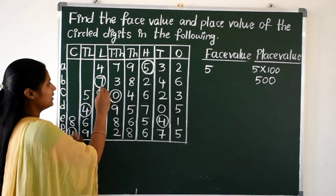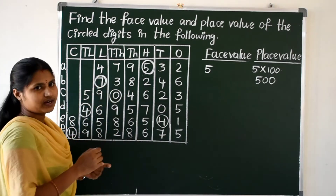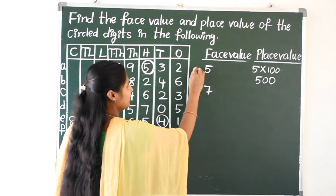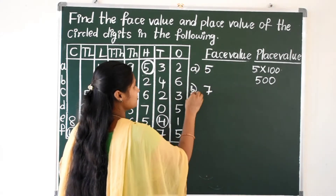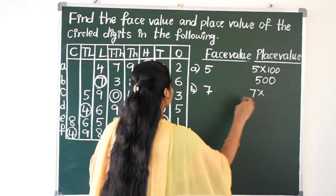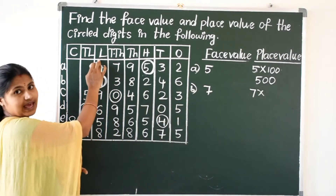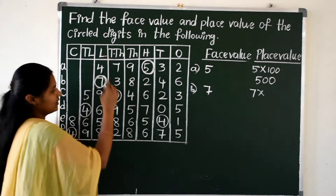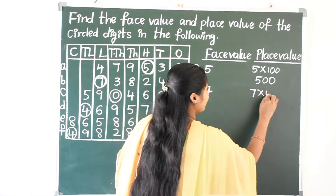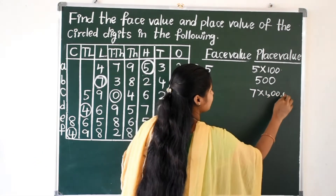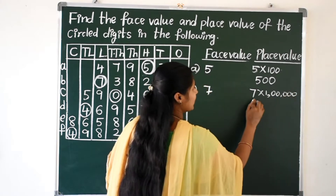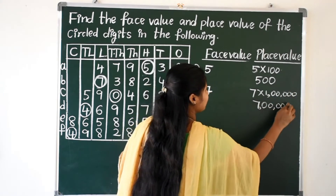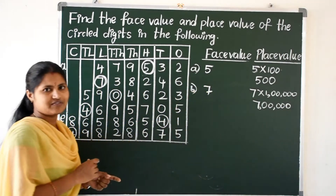Next, the circled digit is seven. The face value of seven is seven. The place value of seven — seven is in the lakhs position, so seven into one lakh gives seven lakhs. The place value of seven is seven lakhs.